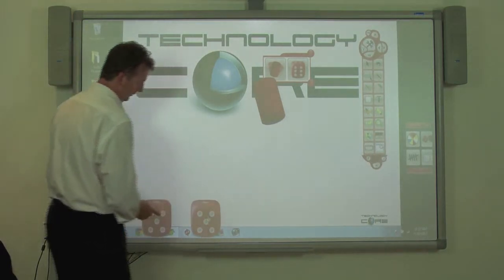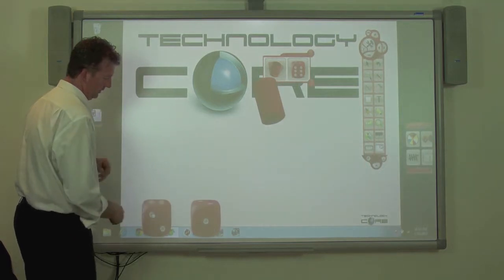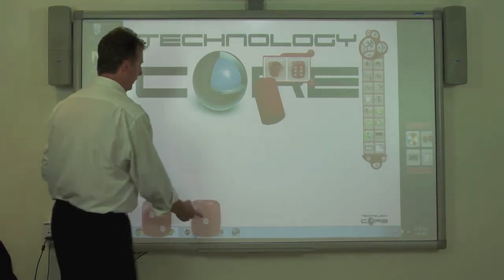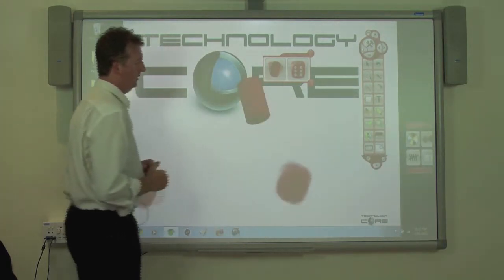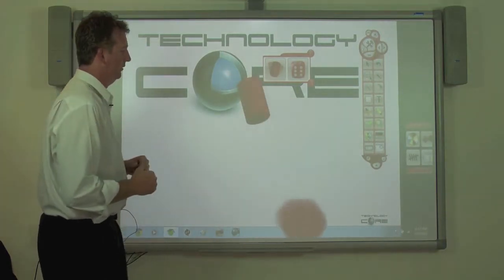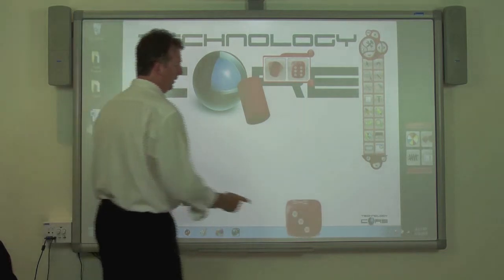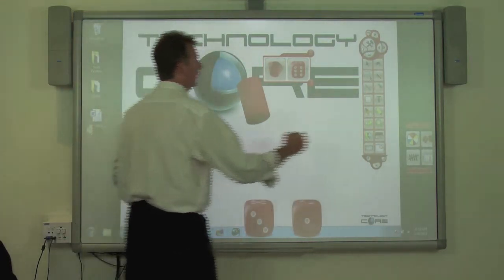We can actually just touch them, and they will actually change the number also. So either way, into the cup, spin it, they'll come out, or we can just touch the dice, and they'll change for us.